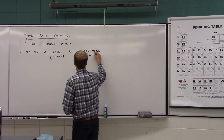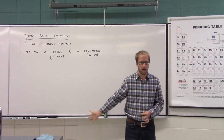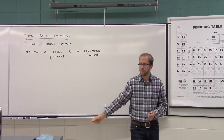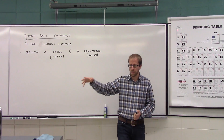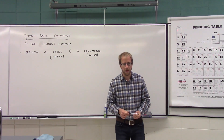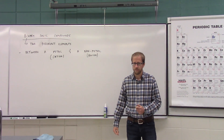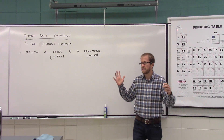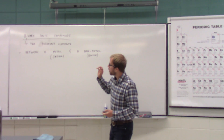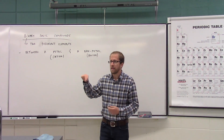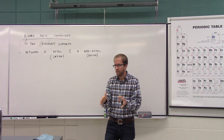The nonmetal is going to be your anion. Nonmetals typically form negatively charged ions. If you look at the halogens, they have seven valence electrons, so they take on a charge of negative one. Oxygen and sulfur have six valence electrons — negative two. Nitrogen and phosphorus — negative three. So a binary ionic compound is an ionic bond between a metal and a nonmetal.